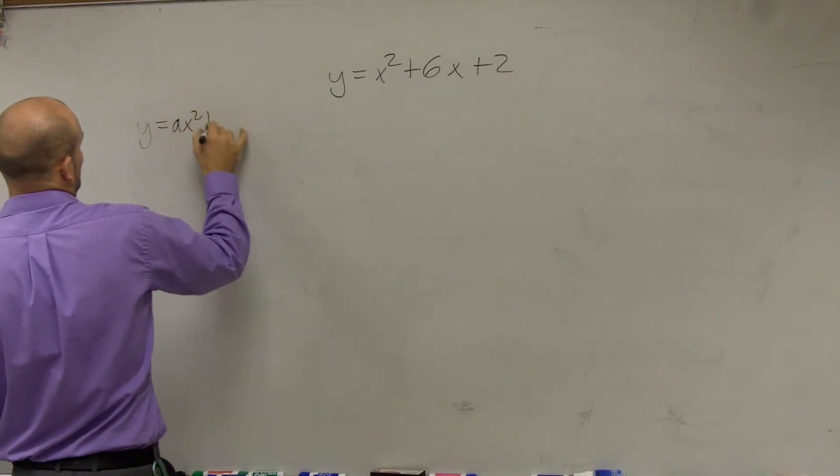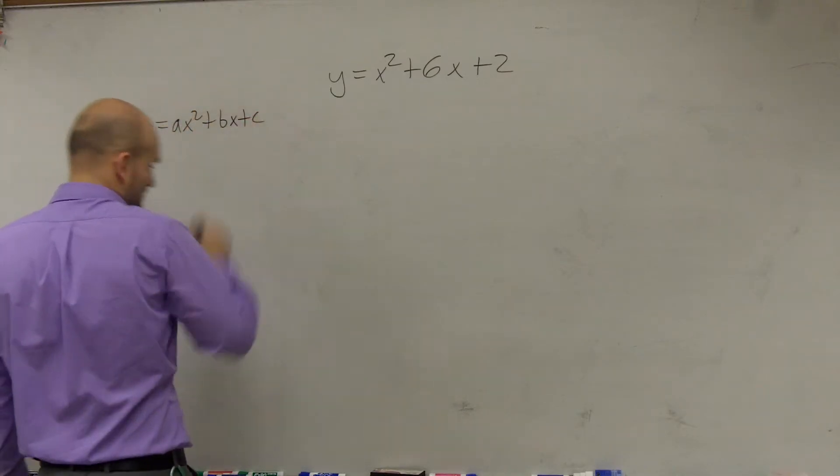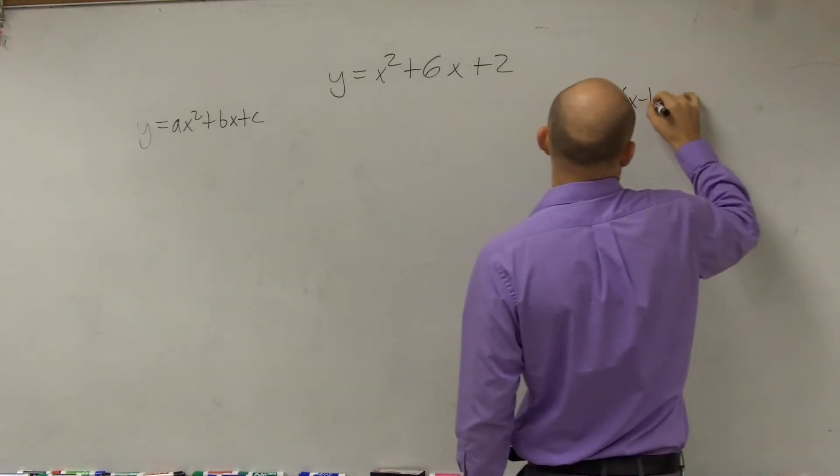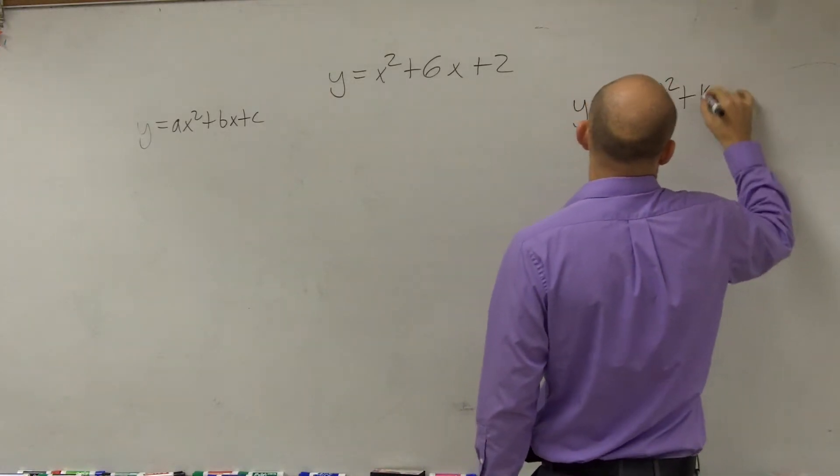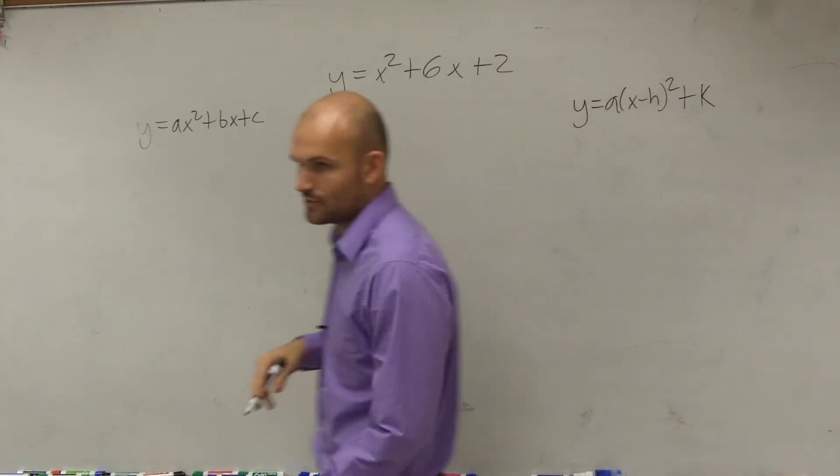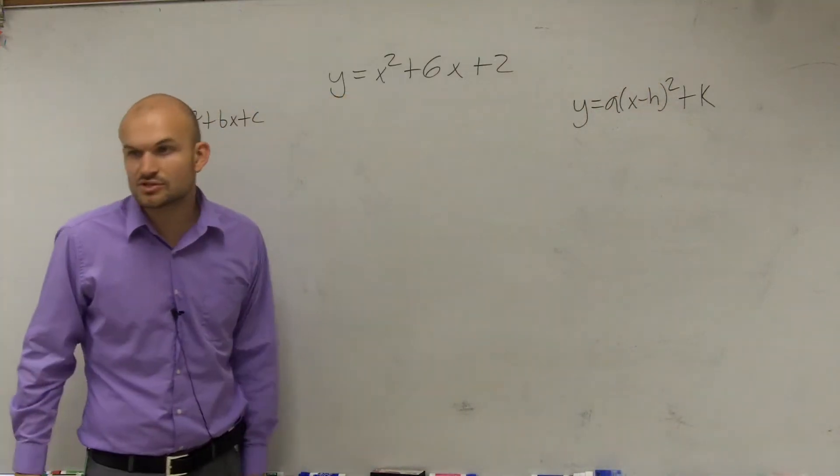y equals ax squared plus bx plus c. And now we want to put it in y equals a times x minus h squared plus k. Quadratic form, complete vertex form. So to do that, we're going to have to complete the square.